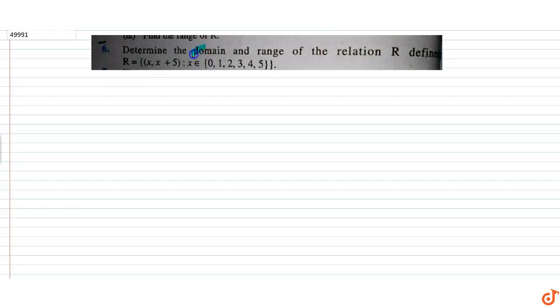The question given is to determine the domain and range of the relation R defined as R equals (x, x+5) such that x belongs to {0, 1, 2, 3, 4, 5}.